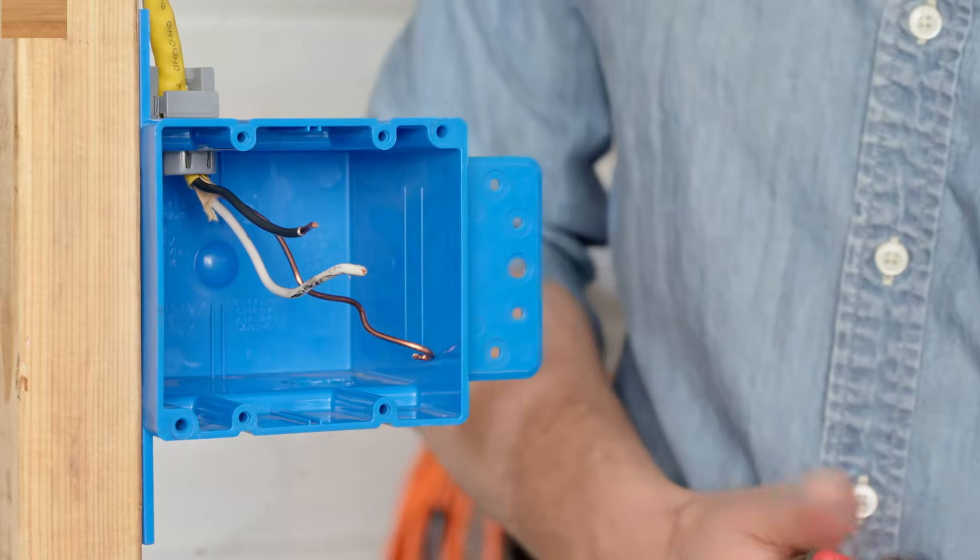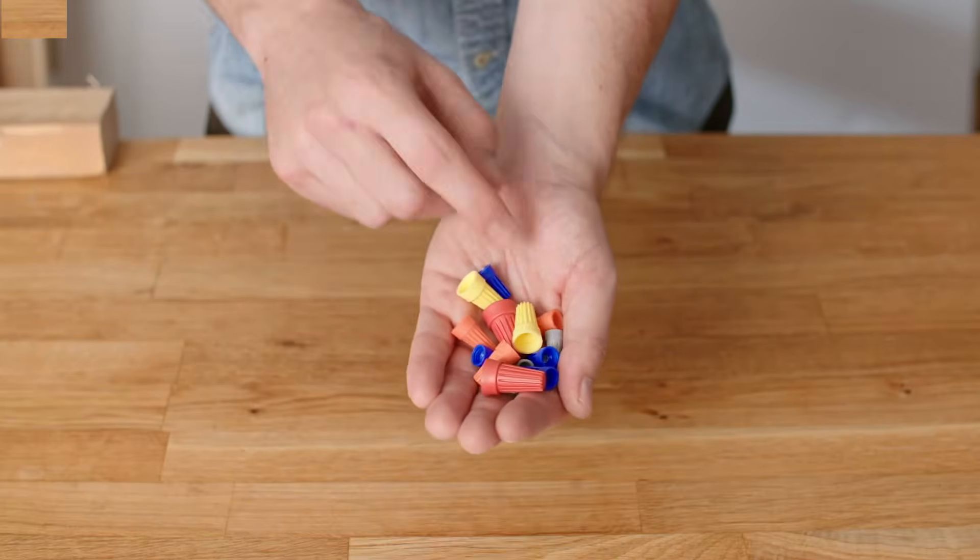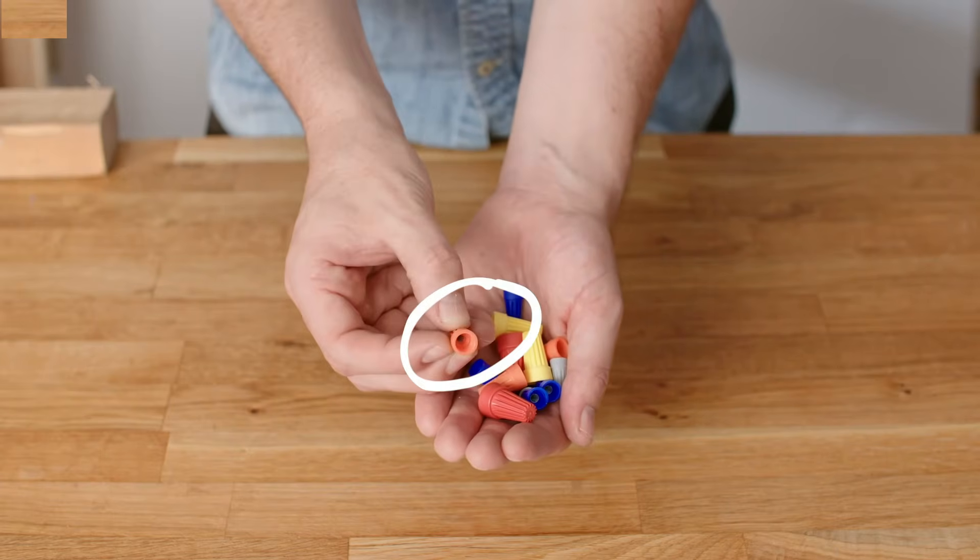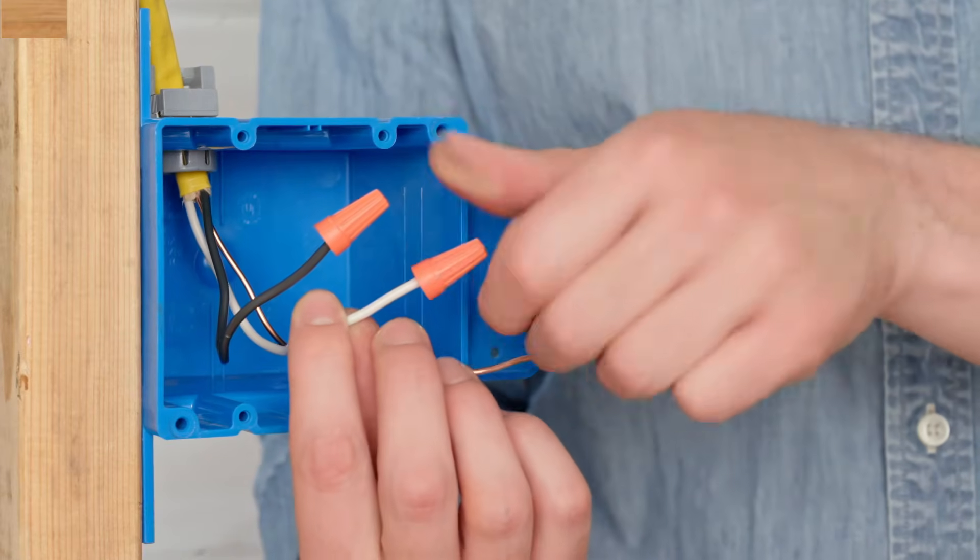Now twist on a plastic wire nut to cap each wire. Use the appropriate size wire nut to cap your wire. The smallest nuts in most standard variety packs work best for 14 gauge and 12 gauge wire. Turn the wire nut clockwise as tight as you can get it by hand.